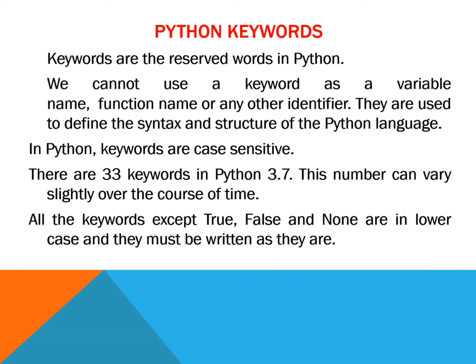Python keywords. Keywords are reserved words in Python. We cannot use a keyword as a variable name, function name or any other identifier. They are used to define the syntax and structure of the Python language. In Python, keywords are case sensitive. There are 33 keywords in Python 3.7, and this number can vary slightly over time. All keywords except True, False and None are in lowercase and must be written as they are.